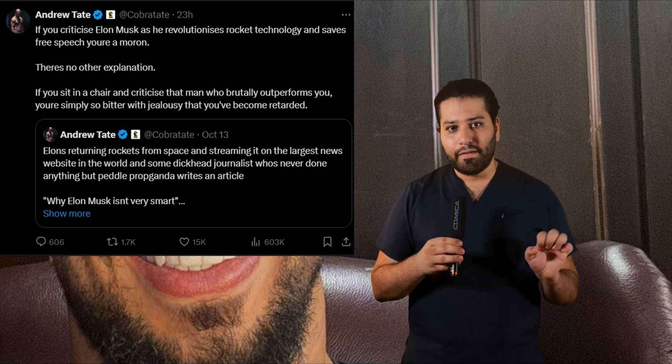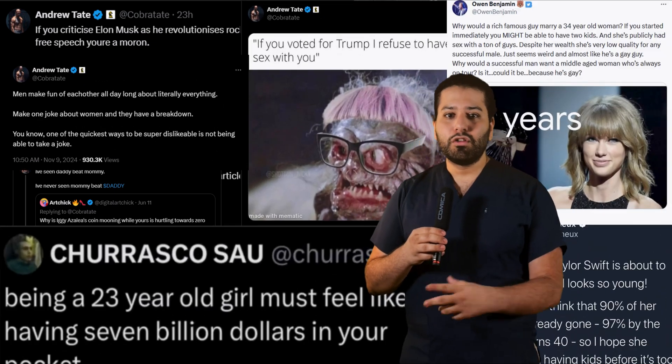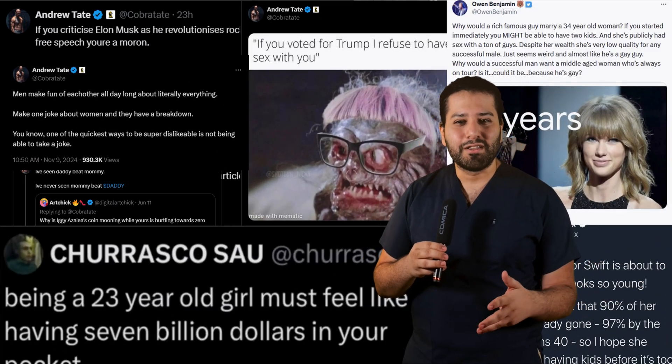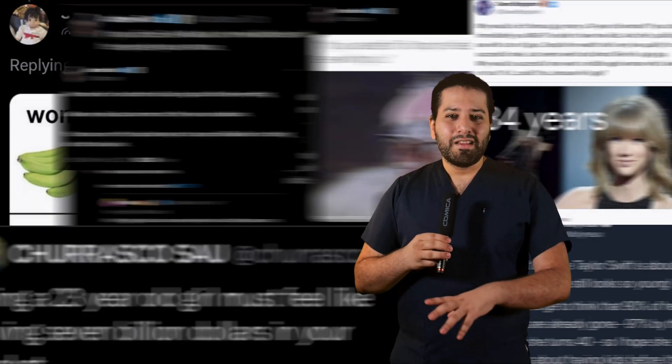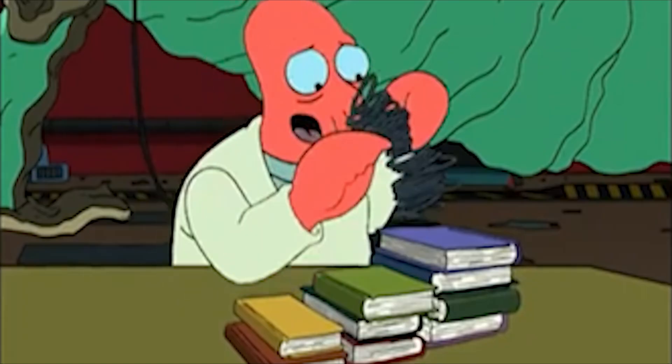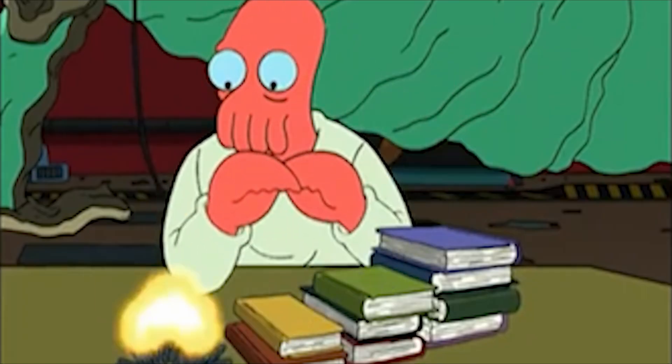Now, misogynists on Elon Musk's hate speech platform love, absolutely love, to fixate on women and their age, and what that age means for their ability to bear healthy children. That's probably because scientists studying reproductive medicine have, for the longest time, been obsessed with advancing maternal age, completely ignoring the impact of advancing paternal age on offspring health.